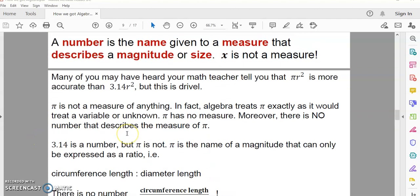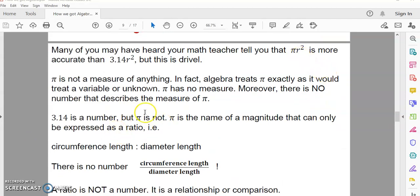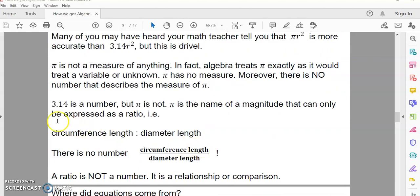Now, many of you have heard your math teacher tell you that pi r squared is more accurate than 3.14 r squared, but this is drivel. Pi is not a measure of anything. Algebra treats pi exactly as it would treat a variable or an unknown, and pi has no measure. So, there is no number that describes the measure of pi. However, 3.14 is a number. Now, remember that pi is the name of a magnitude that can only be expressed as a ratio.